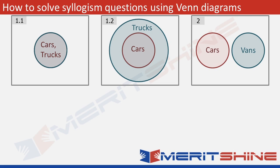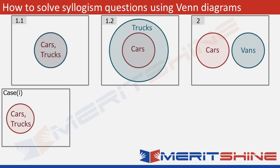Let's first combine 1.1 and 2 — we'll call it case 1. In figure 1.1 we have cars and trucks as the same circle. If we combine it with figure 2, vans would be drawn as a completely separate circle. Since there is no intersection between cars and vans, there will be no intersection between vans and trucks either.